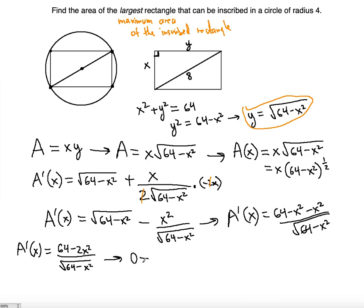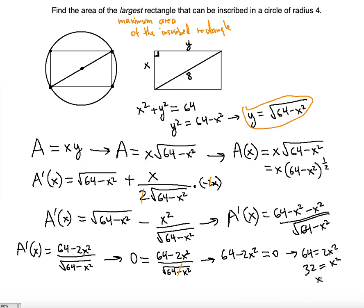Now set the derivative to zero to find the x that maximizes the area. Setting 64 minus 2x squared over the square root of 64 minus x squared equal to zero — multiplying both sides by the denominator — gives 64 minus 2x squared equals zero. Adding 2x squared to both sides: 64 equals 2x squared, so x squared equals 32, meaning x equals the square root of 32. Solving for y: y equals the square root of 64 minus 32, which is the square root of 32.